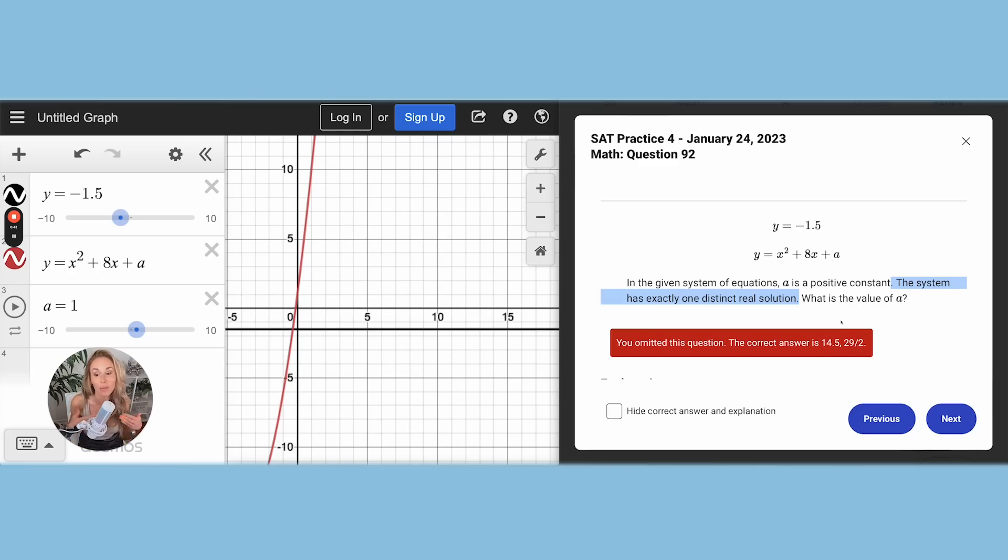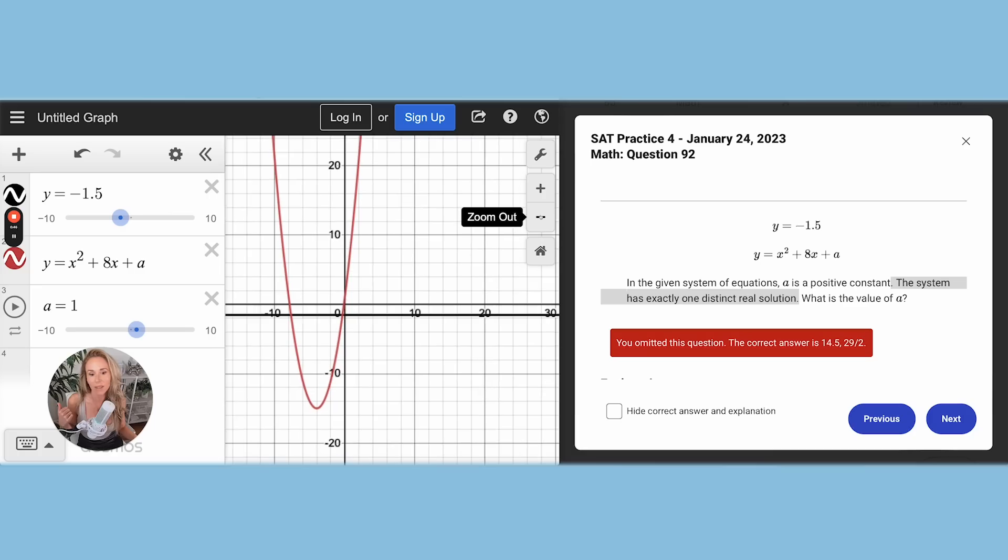So if there's one distinct real solution, that means they're going to cross at exactly one point. So if I have a quadratic, let me zoom out a little bit, and a line, I want the vertex to touch the line, and that's it.